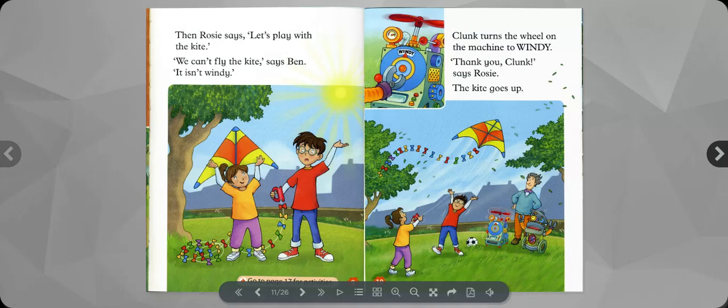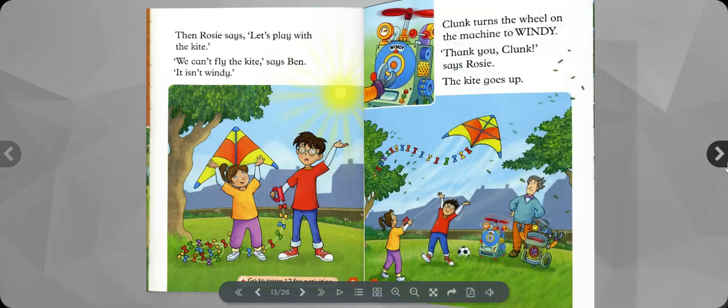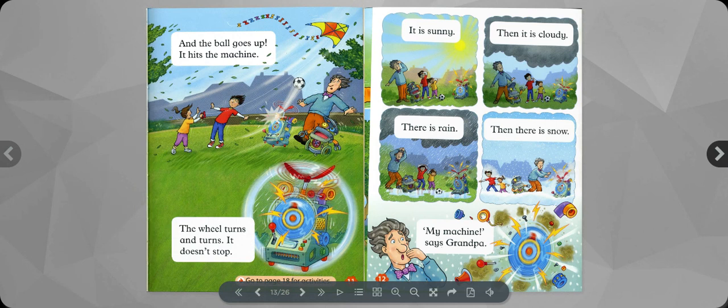Clunk turns the wheel on the machine to Windy. Thank you, Clunk, says Rosie. The kite goes up. And the ball goes up. It hits the machine. The wheel turns and turns. It doesn't stop.